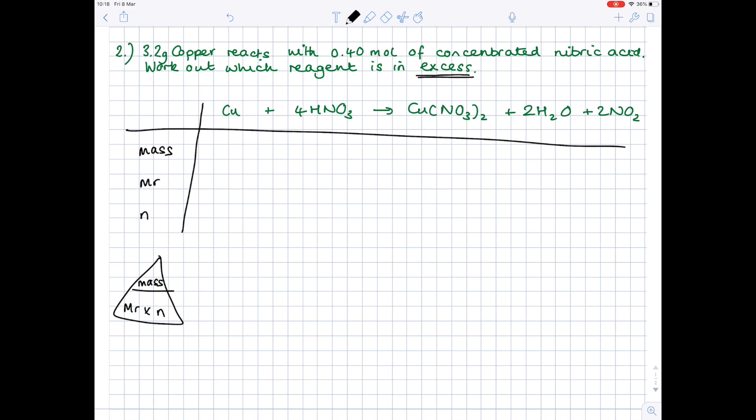So we know from the question we have 3.2 grams of copper. In terms of the nitric acid, they've gone in straight away and told us that we have 0.4 moles of nitric acid. So that's good. We have less to do here. So looking for the MR of copper using your periodic table, you'll see that it's 63.546. Using our formula triangle, we're going to work out the number of moles of copper by doing 3.2 divided by 63.546. And that gives us a number of moles of 0.05035.